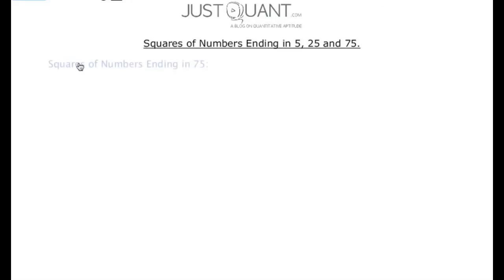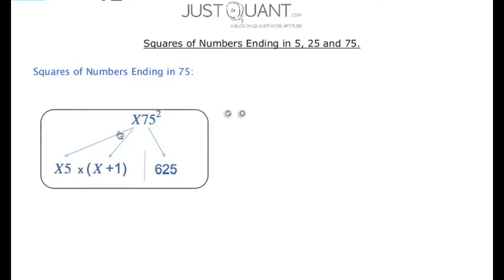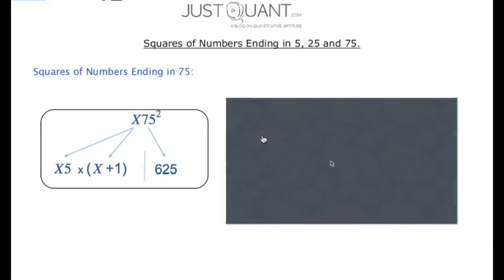Now, we will look into the squares of numbers ending in 75. We can represent the numbers ending in 75 as x75, where x is the number preceding 75. Now similar to our previous techniques, the square of it will have two parts. The right part will always be 625, and the left part will be x5 times x plus 1. Let us apply the above technique to an example.